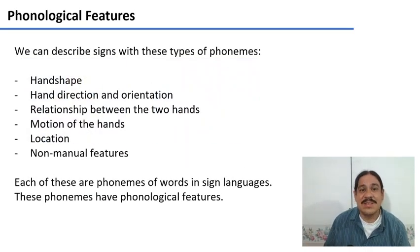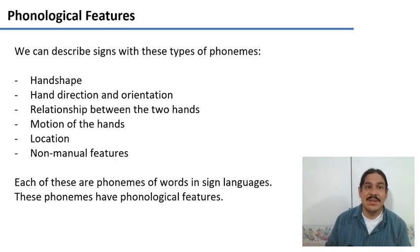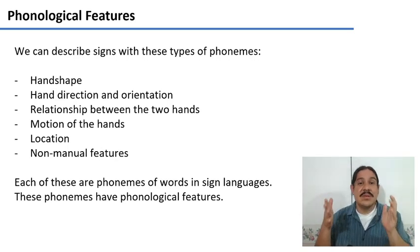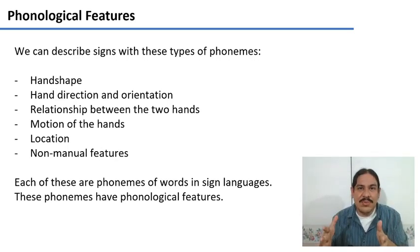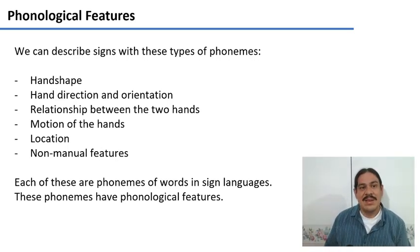As we saw last week, there are several ways that we can describe a word in a sign language, and all of these are essentially going to be their phonemes. Same as we had consonants and vowels, which are different types of phonemes in spoken languages, we're going to have different types of phonemes in sign languages. For example, hand shape, direction of your hand, relationship between the two hands, the motions of your hands, their location, and any non-manual features with your lips or your eyebrows. So these are going to be the phonemes that make up a word in a sign language.